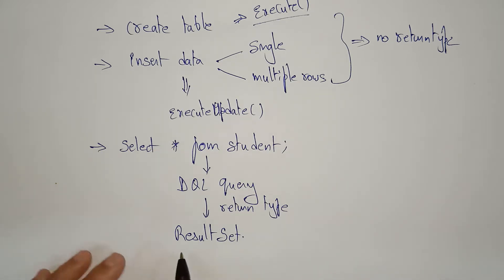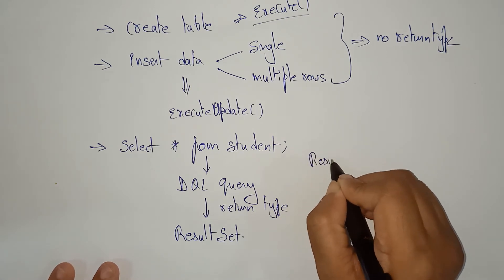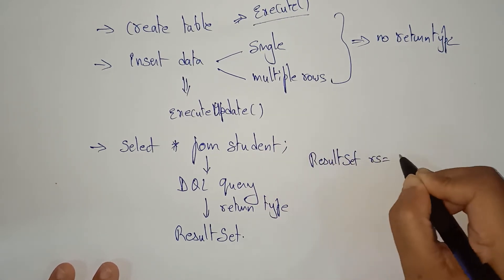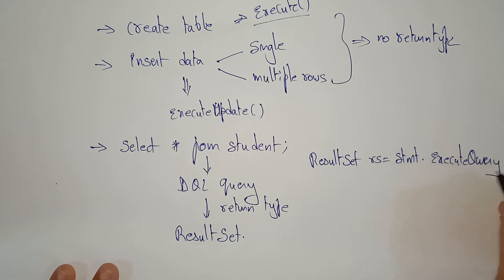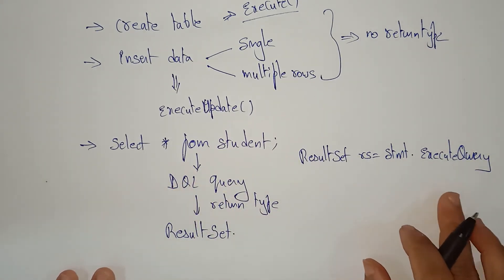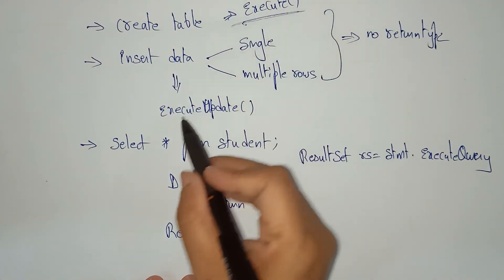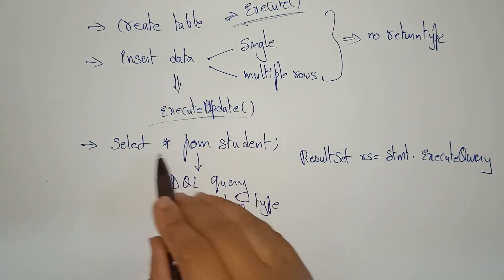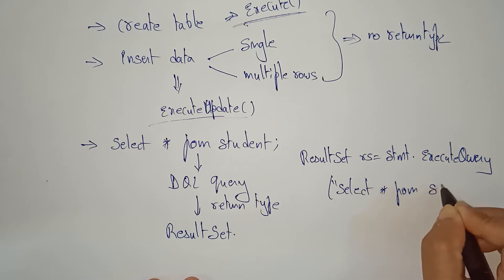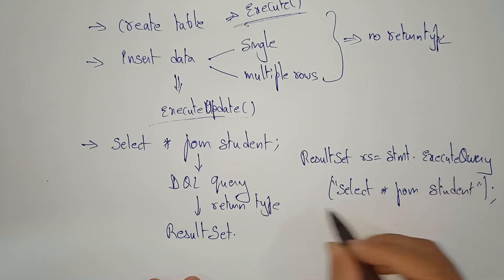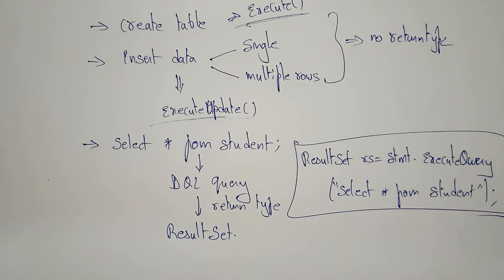We have to write one statement: ResultSet rs = statement.executeQuery(). The method used to execute the SELECT statement is executeQuery(). For create table — execute(); for inserting — executeUpdate(); for selecting — executeQuery(). Everything else — loading drivers, connection establishment — remains the same.